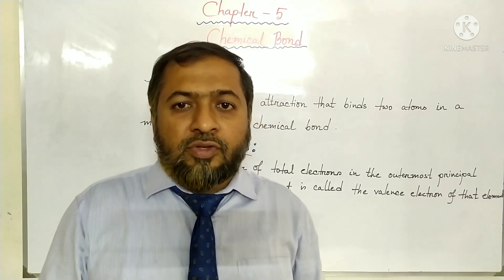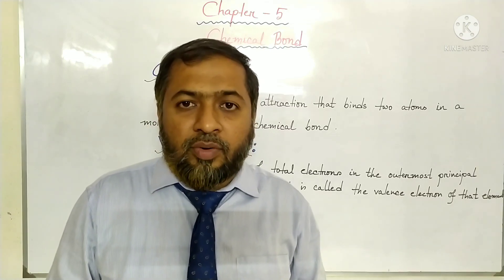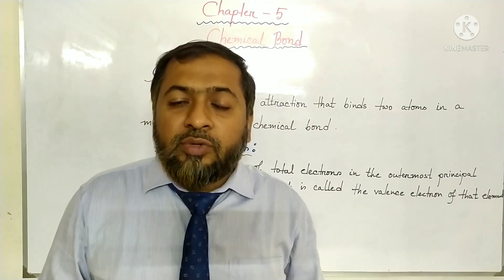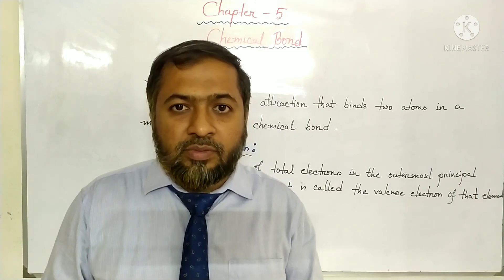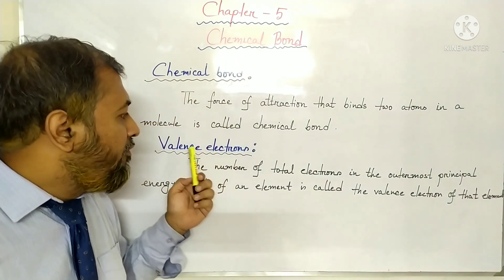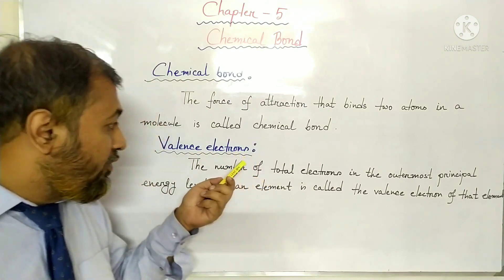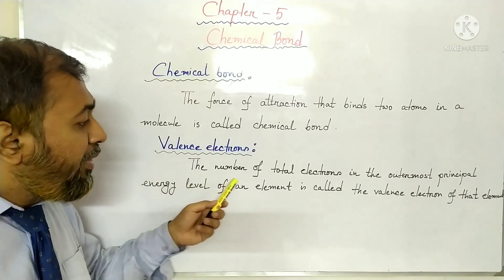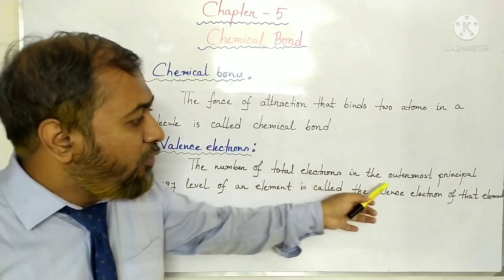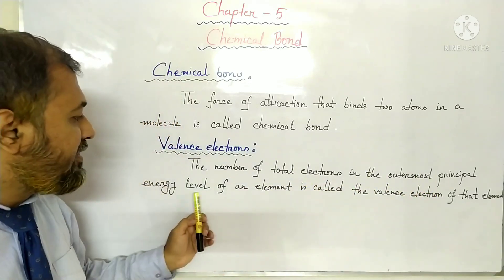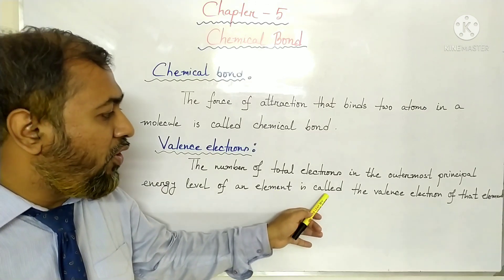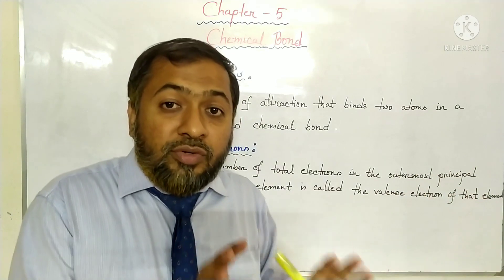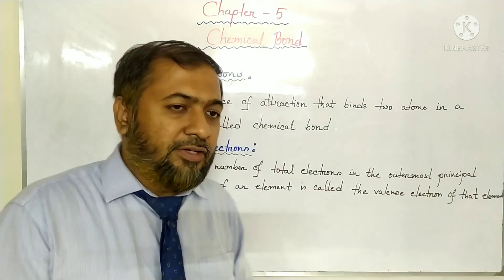To understand chemical bond, we need to understand some topics. Among them, valence electron is one of the most important ones. So what is actually a valence electron? The number of total electrons in the outermost principal energy level of an element is called the valence electron of that element.